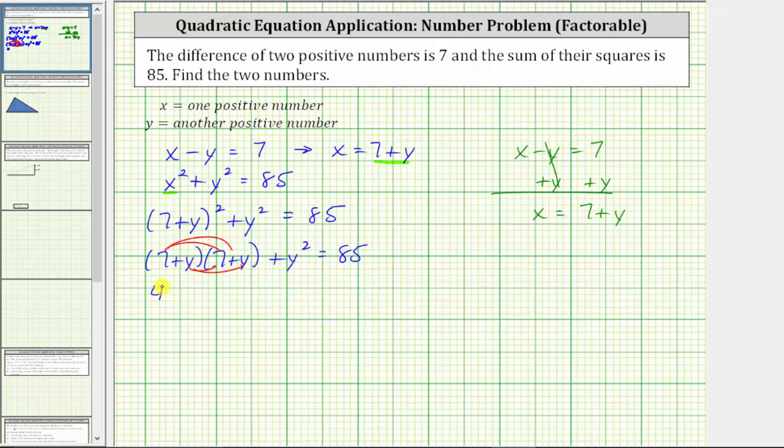Seven times seven is 49, plus seven times y is seven y, plus y times seven is also seven y, plus y times y, which is y squared, and then we still have this plus y squared, equals 85.